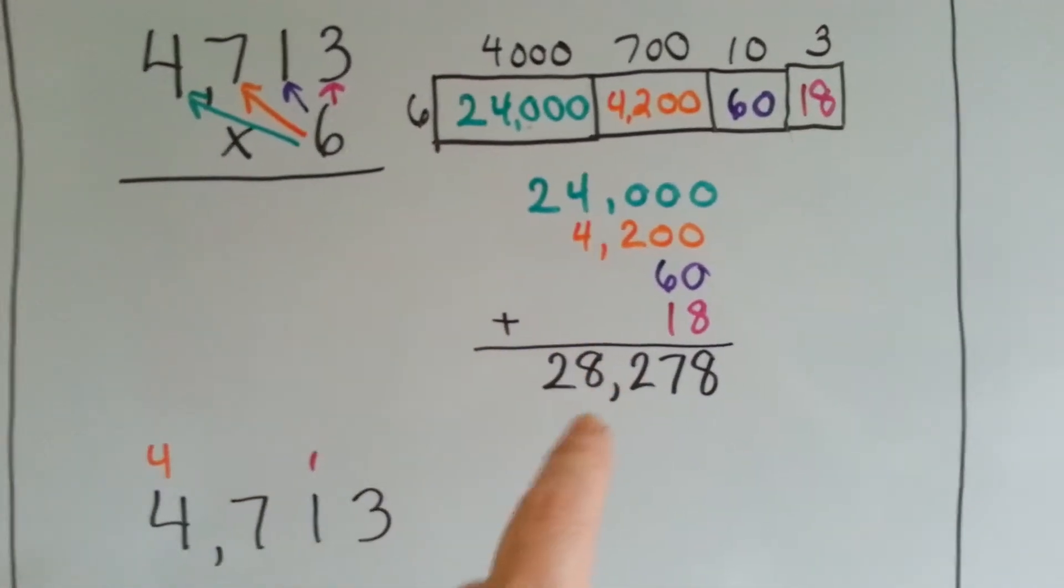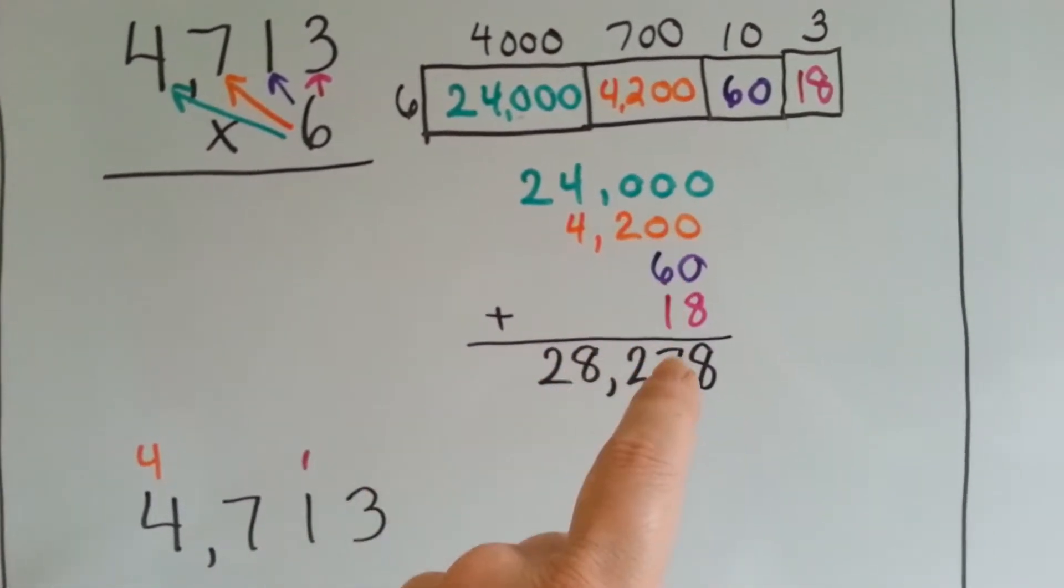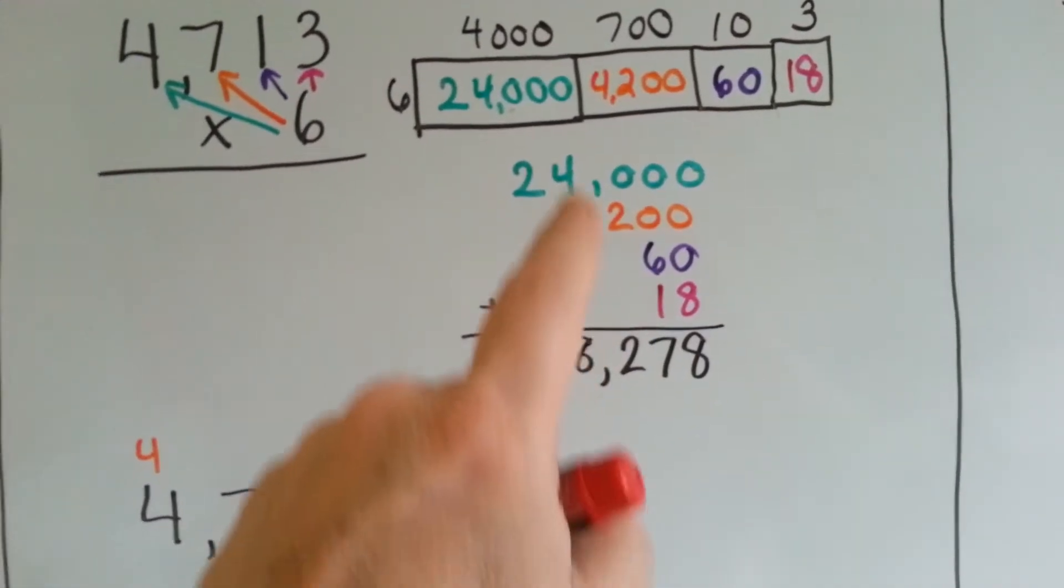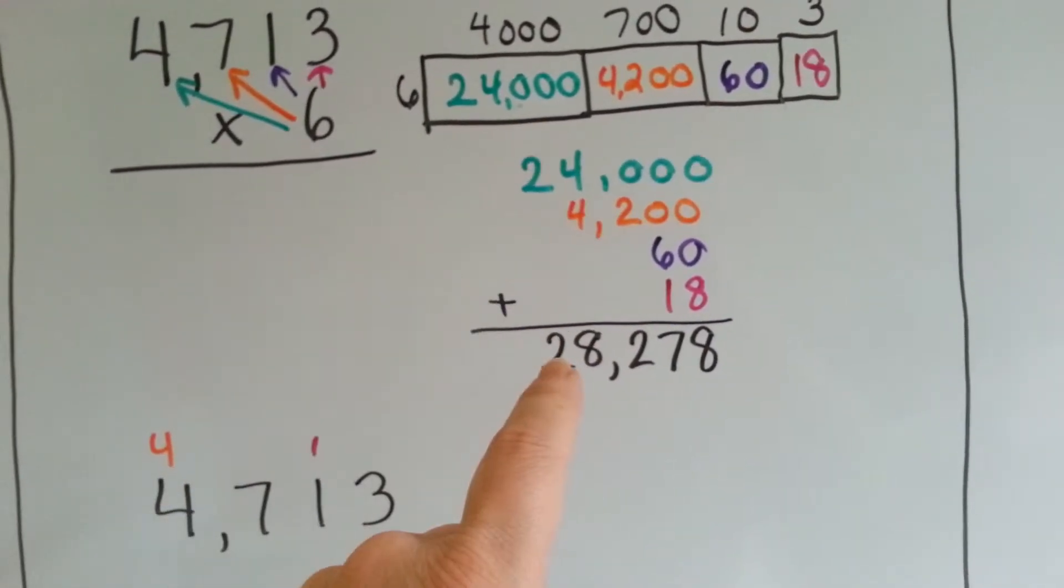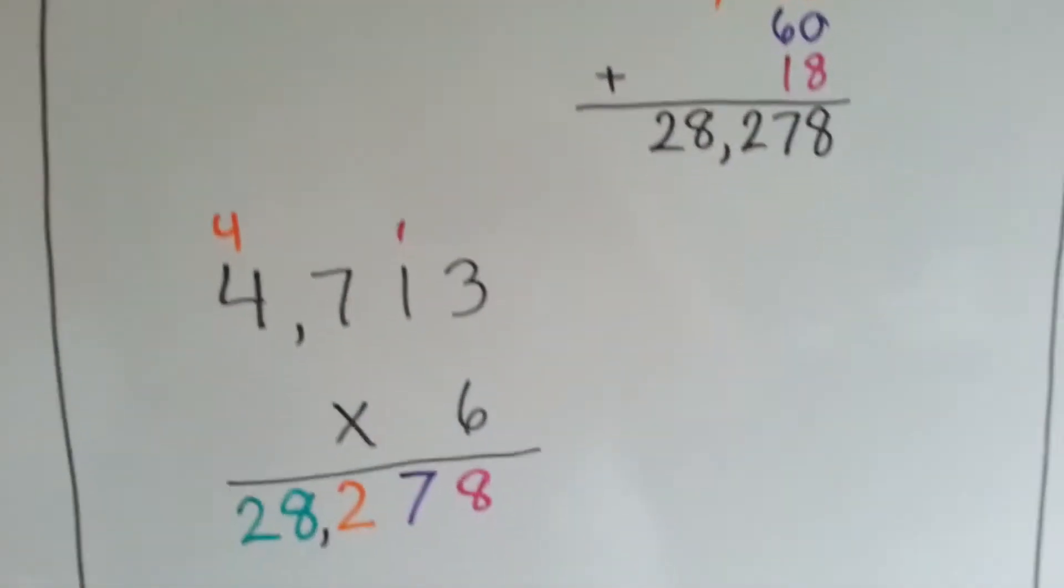When we go to add these all up, that's an 8. 6 and 1 is 7. We drop the 2. 4 plus 4 is 8. We drop the 2, and we get 28,278.